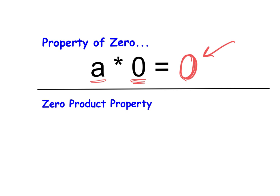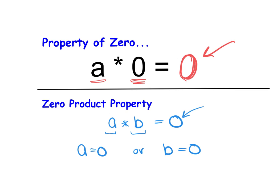What the zero product property states is: if we have two things, A times B, equal to zero, then either A is equal to zero or B is equal to zero. One of them has to be zero; otherwise, the equation wouldn't multiply out to be zero. We're going to use this to our advantage to solve polynomials — understanding how multiplication equaling zero tells us that either the A value or the B value is zero.